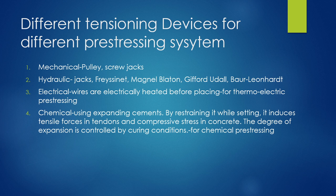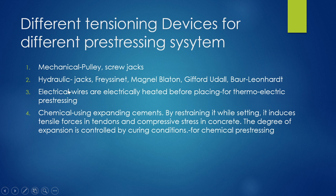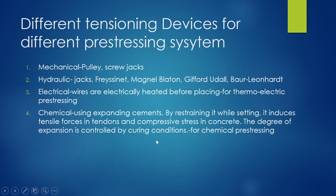There are different ways of providing tension to the tendons: mechanical using pulleys or screw jacks, hydraulic jacks, or different systems such as Magnel-Blaton, Gifford-Udall, Ball, Leonard. In electrical or thermoelectric prestressing, the wires are electrically heated before placing the concrete. In chemical prestressing, expanding cements are used — by restraining them while setting, tensile force is induced in the tendons and compressive stress in the concrete. The degree of expansion can be controlled by curing.